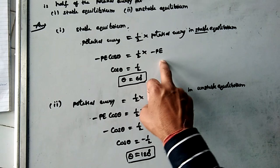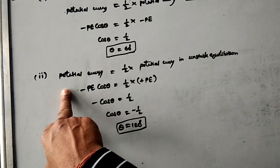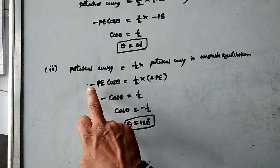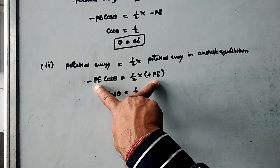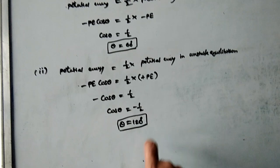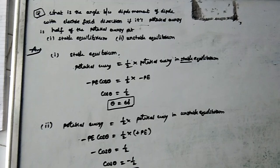For the second case: potential energy equal to half of the potential energy in unstable equilibrium. So −PE cosθ = ½(+PE). PE cancels, giving −cosθ = ½, so cosθ = −½, and theta = 120 degrees. This question is already in the class work notebook — practice these applications perfectly and check it carefully. We will see the remaining things in the next slide.